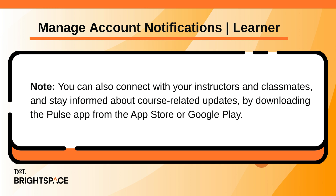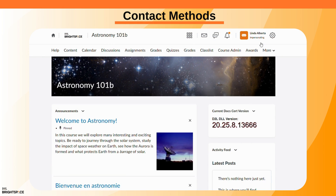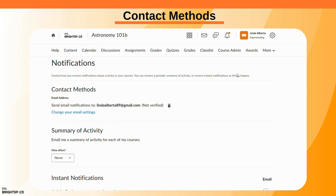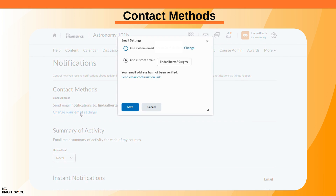By downloading the Pulse app, which you can find in the App Store or Google Play. Click your username, then go to Notifications to adjust your notification preferences.